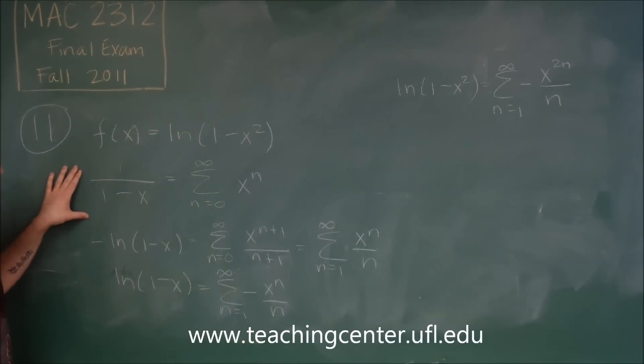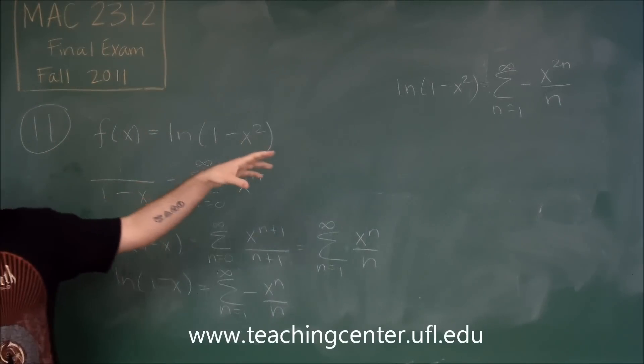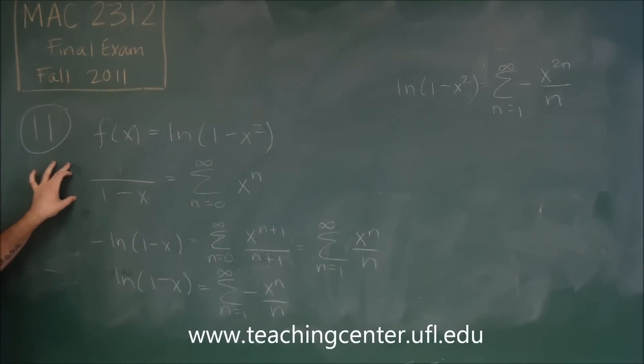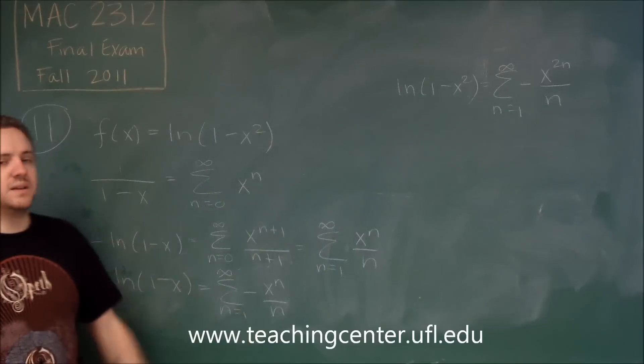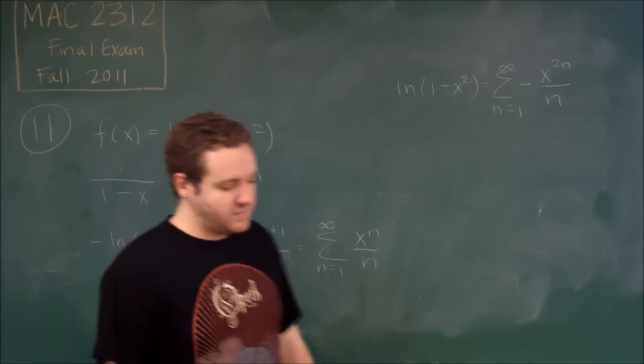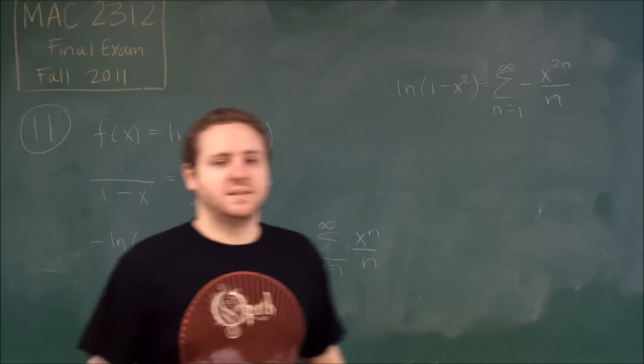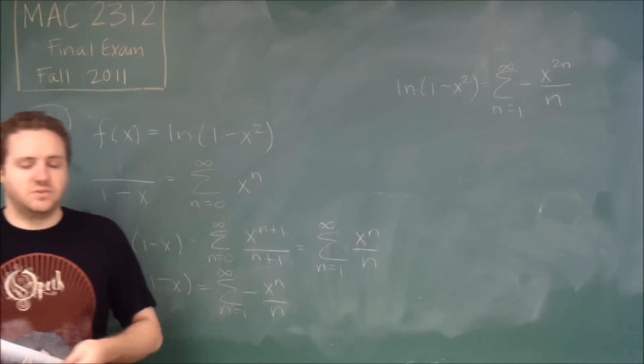So again, that was just starting with the standard power series that we know. If we think about how can we turn this into an ln, we have to do the antiderivative. Once we've done that, do all of your minor changes to turn this function into the exact one that we want. And we get the sum -x^(2n)/n, which is answer choice D.